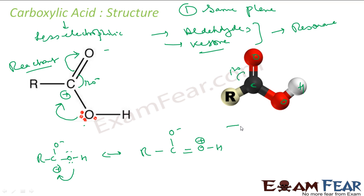So if you see, there are three structures: one is this, one is this, one is this. So since there are three structures, this compound is stable. R-COOH is stable. Since it is stable, it is not that reactive, it is less electrophilic.